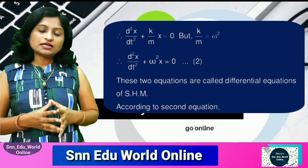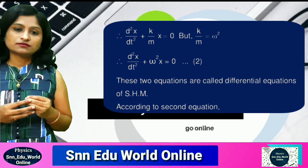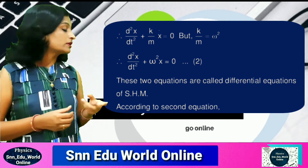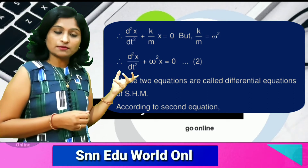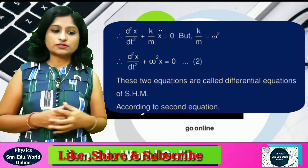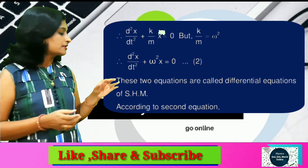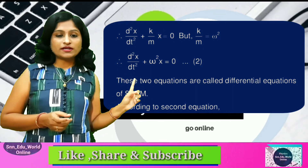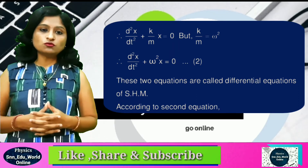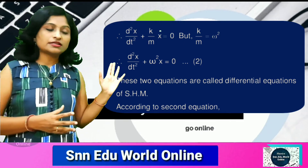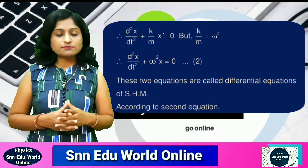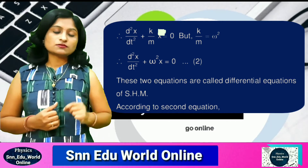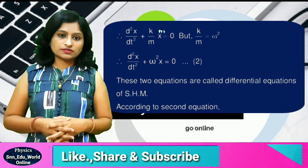Now k divided by m is a constant that we call omega squared. Substituting k/m as omega squared, we get the final result: d²x/dt² plus omega squared times x equals 0. This is the differential equation of simple harmonic motion.